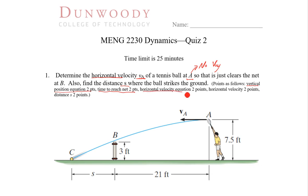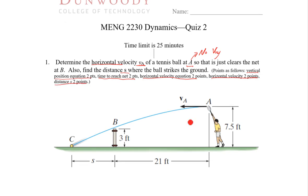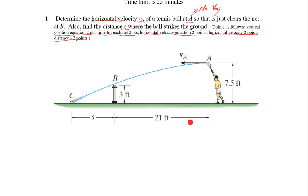Horizontal velocity equation is two points. Finding that horizontal initial velocity, that VA. And then finally, the distance S. So looking at this problem, we need to think about our approach. So what is our approach going to be?